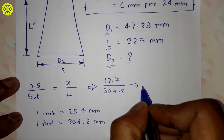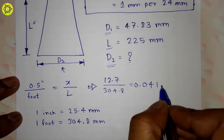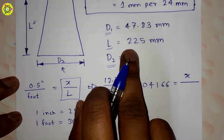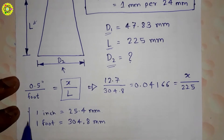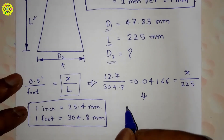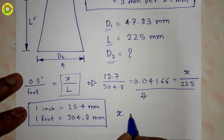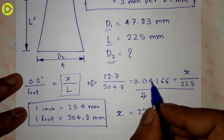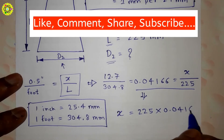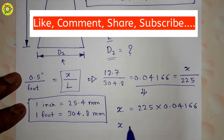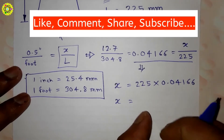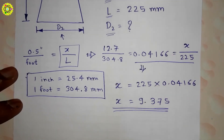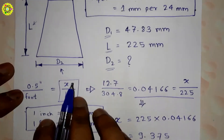After solving the ratio 12.7 / 304.8, we get 0.04166. This equals x upon l. Since l = 225 mm, we have x = 225 × 0.04166, which gives x = 9.375 mm.